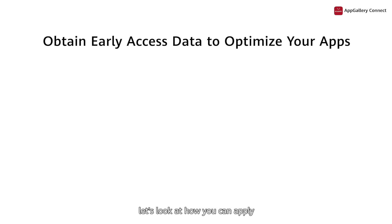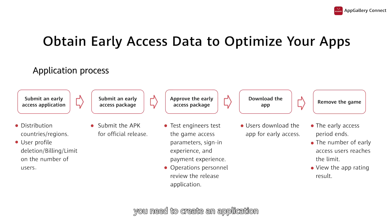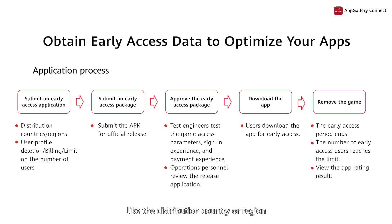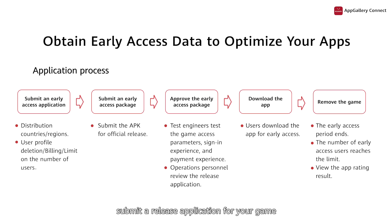Next, let's look at how you can apply for the early access service. First, you need to create an application in AppGallery Connect and enter key information like the distribution country or region. After submitting your application for the early access service, submit a release application for your game and provide the APK for early access.